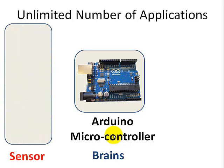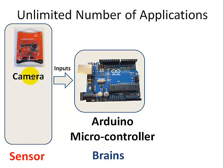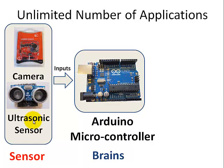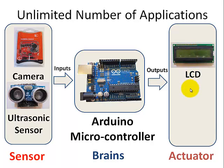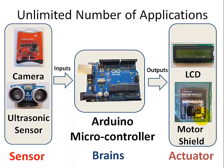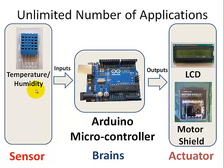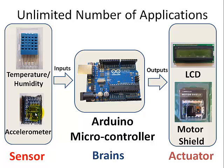You can hook up to the input of this controller sensors such as a camera or ultrasonic sensor to measure distance. The Arduino can output signals so you can display it on an LCD, or control some motors for robotic applications. Other sensors you can hook up to the Arduino include temperature and humidity sensors and accelerometers.